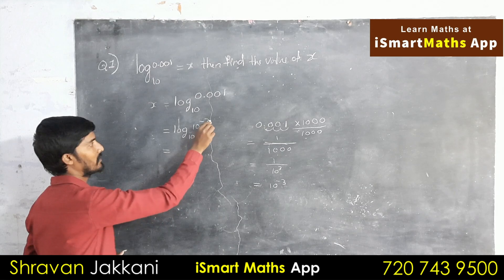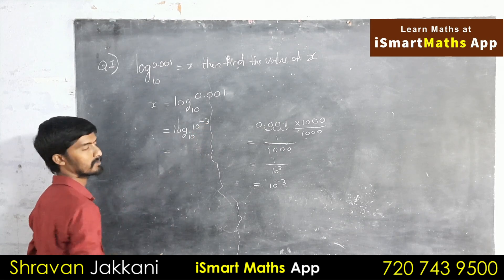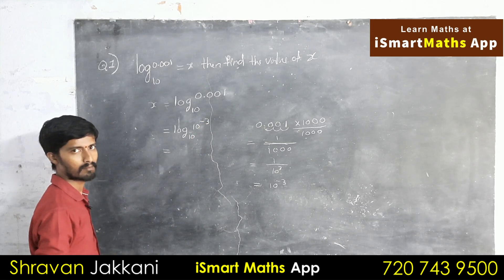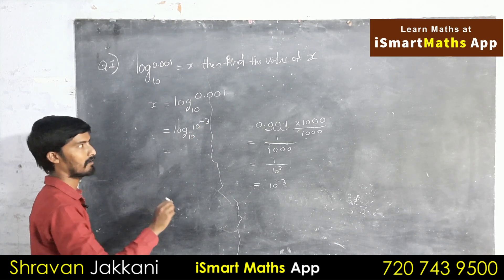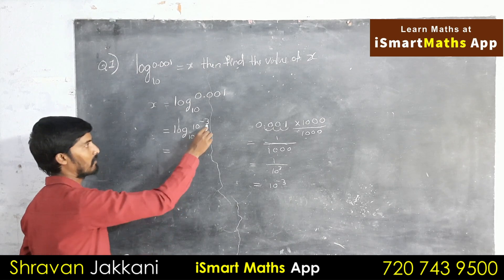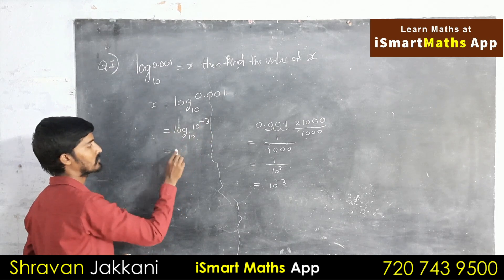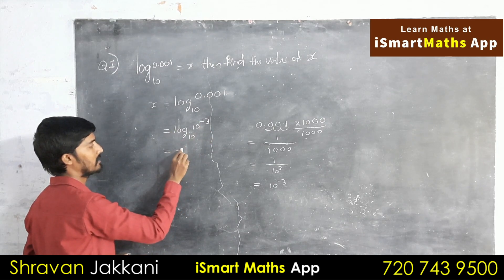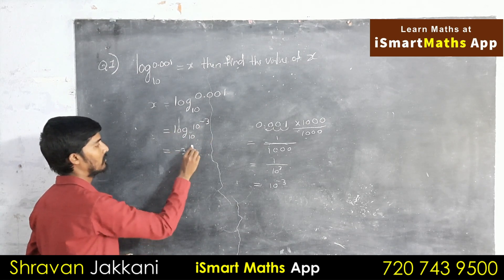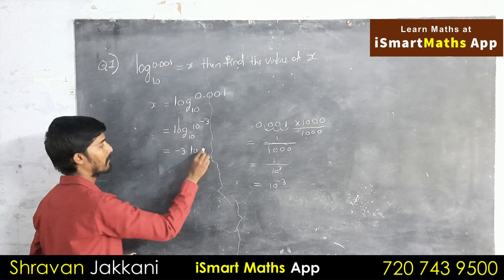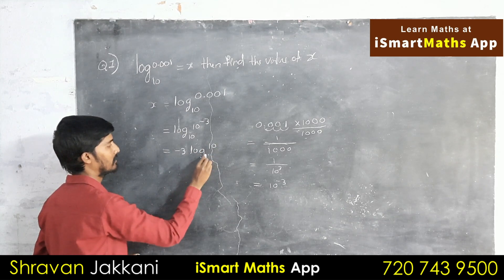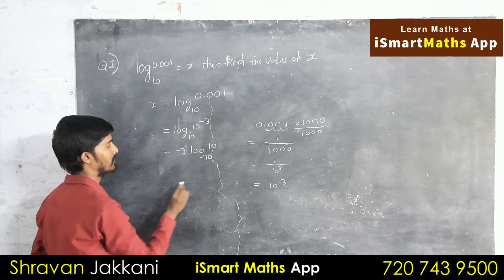The formula is: log x to the power of n, base a, equals n times log x base a. So applying this, log 10 to the power of minus 3, base 10, equals minus 3 into log 10 base 10.